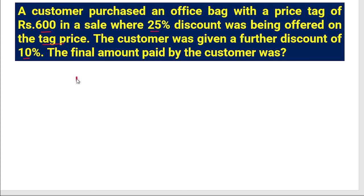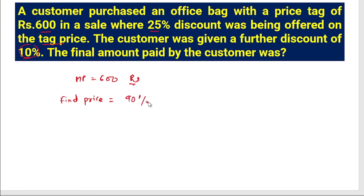The tag price or mark price is 600 rupees. We can solve this type of problem in a single step. The final price equals 90 percent (since 10 percent discount is given) multiplied by 75 percent (since 25 percent discount is given) multiplied by the mark price of 600 rupees.